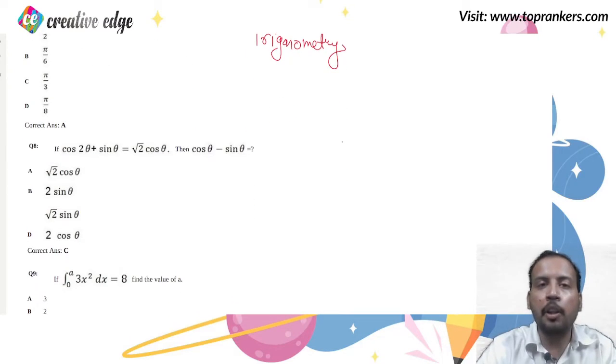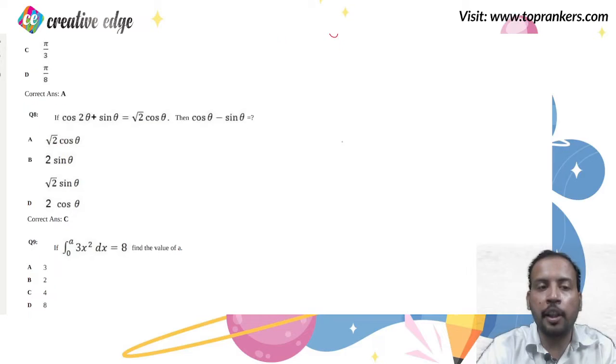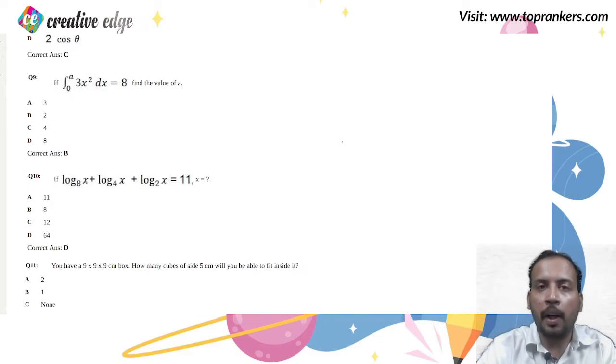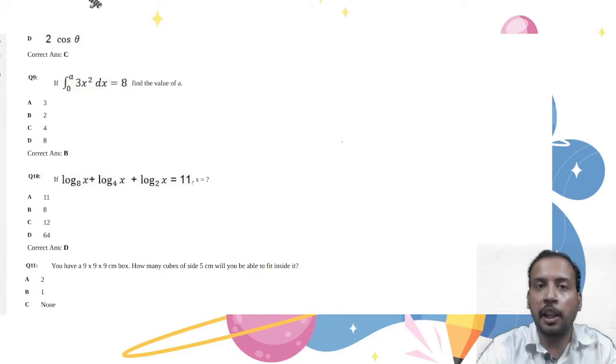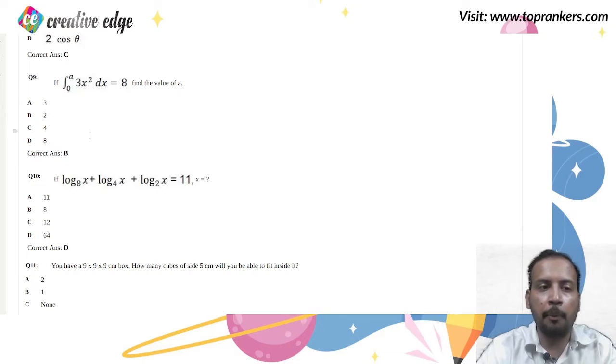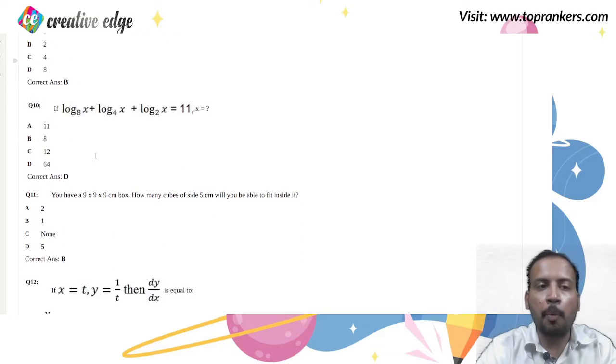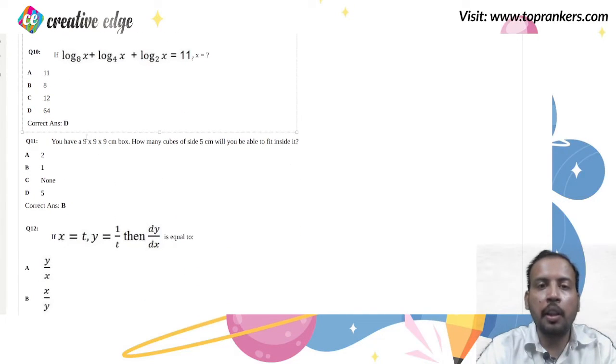The trigonometry question also contains weightage. Now this question is from class 11th or class 12th, that is integration. The very basic level of question is asked in integration. Then it is based on the property of logs. Your next question is again from surface area and volume.